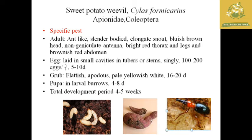The sweet potato weevil comes under the family Apionidae and order Coleoptera. It is said to be a specific pest which attacks mainly only sweet potatoes. The adult has a slender-bodied appearance with non-geniculate antennae. A single female lays around 100 to 200 eggs during its life cycle. The grub is apodous with a whitish, slightly pale yellowish color, with a life period of around 16 to 20 days. The pupa is found in larval burrows of the potato with a period of around 4 to 8 days.